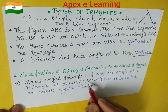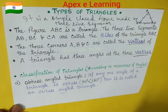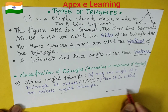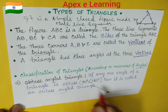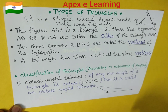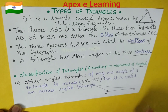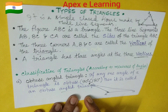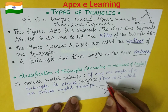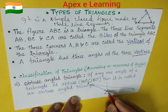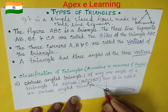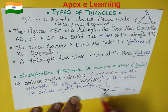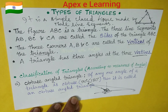Obtuse means more than 90 degrees but less than 180 degrees — that is called an obtuse angle. In Bengali, that is called Sthulokonit Tribhuj. If we draw a diagram, angle B can be more than 90 degrees and less than 180 degrees — that is called an obtuse angle triangle.